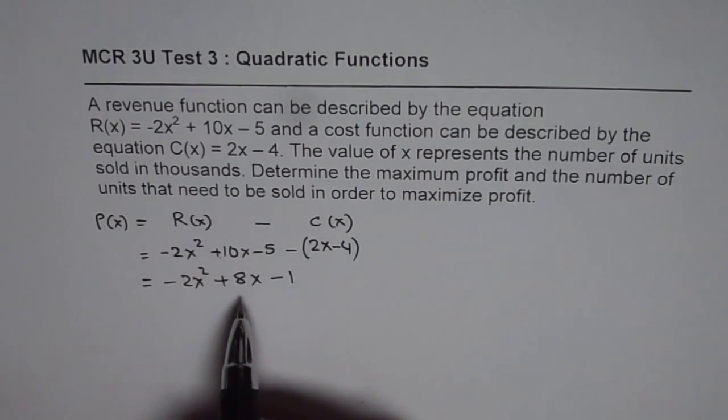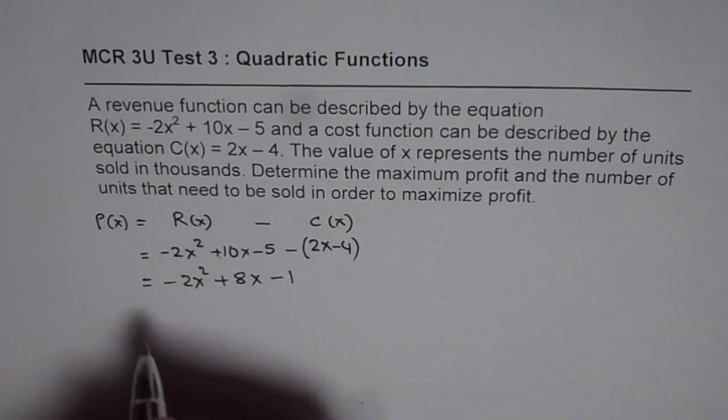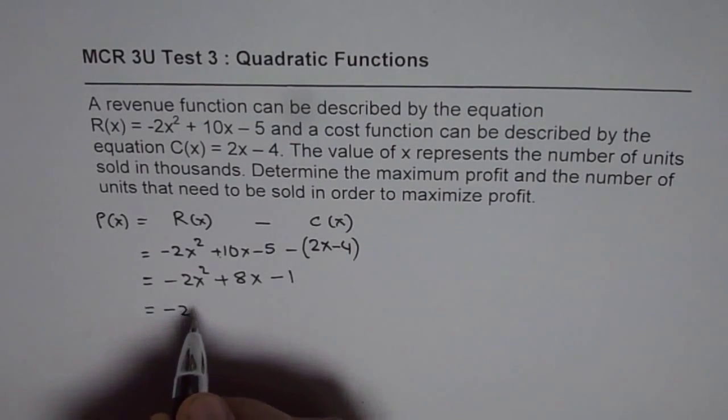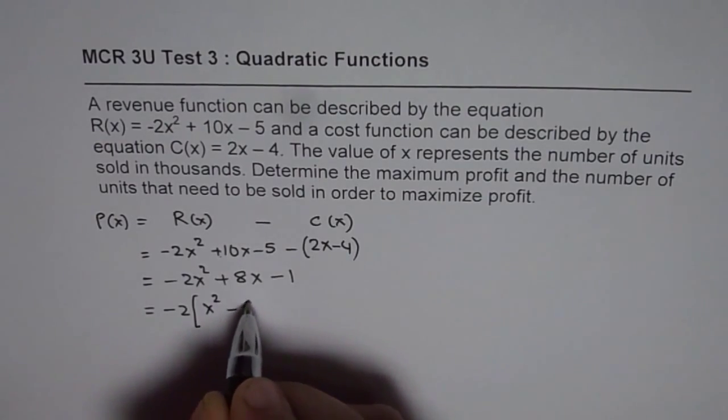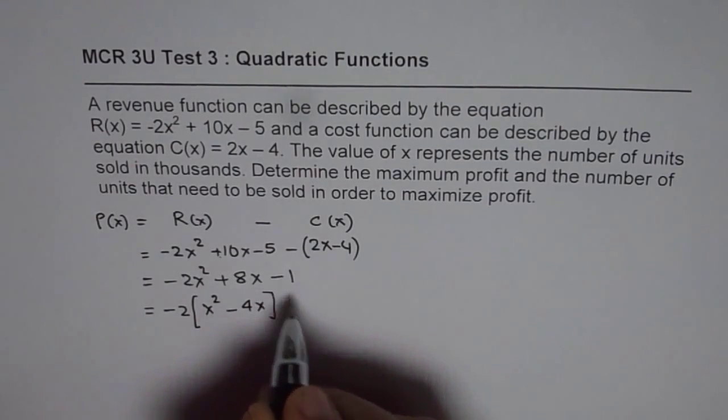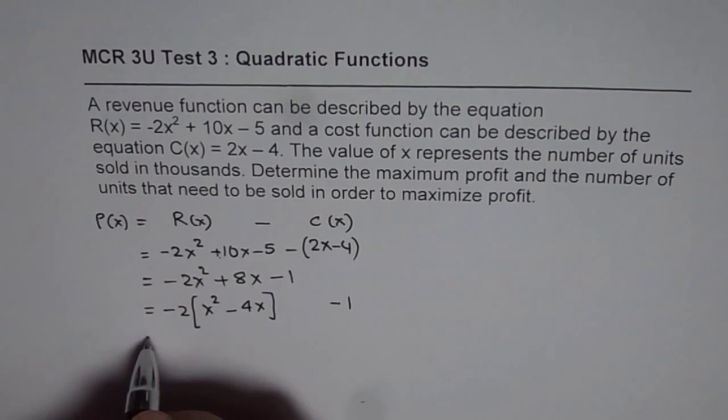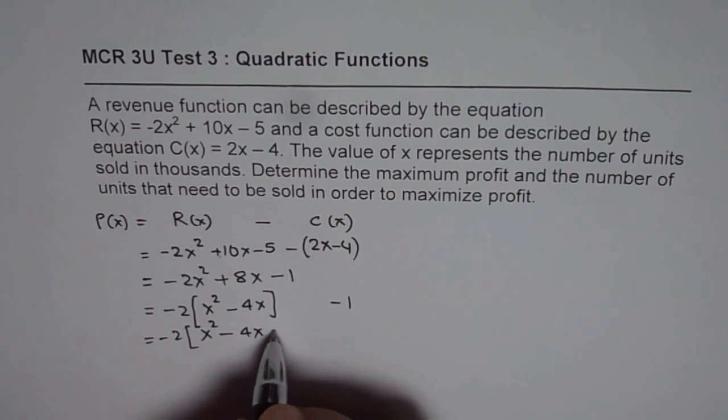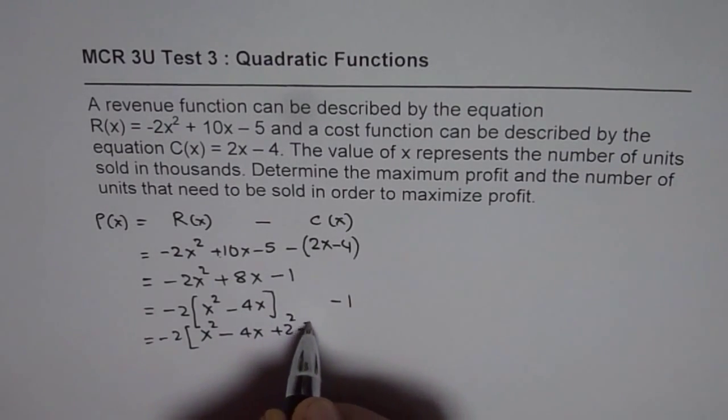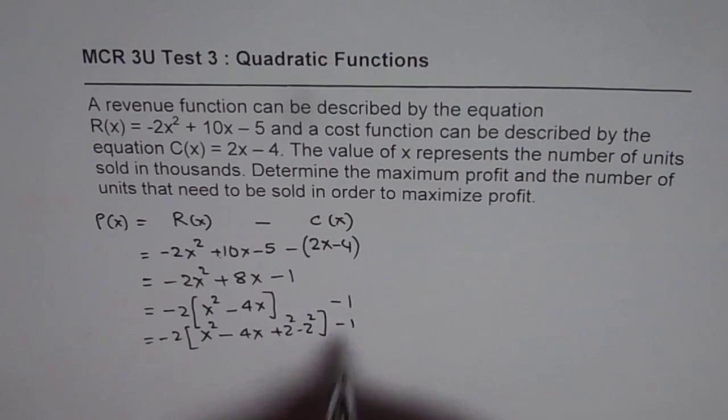So for that, let's do completing the squares method. So for completing the squares, we'll take minus 2 common. Put square brackets. We get x squared minus 4x. This number, keep it separate. And then we have to do half of this. x squared minus 4x. Half of 4 is 2.